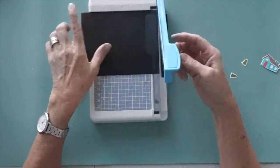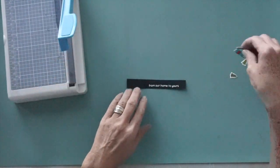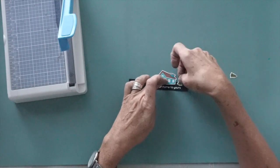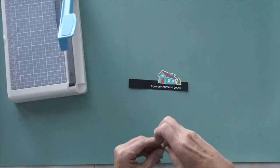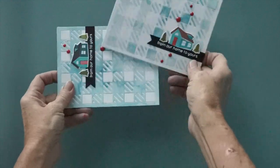After arranging the house and the little trees onto the black sentiment strip I cut a little fishtail on the left and adhered everything to the card front. I added some red enamel dots and there are the cards for today.